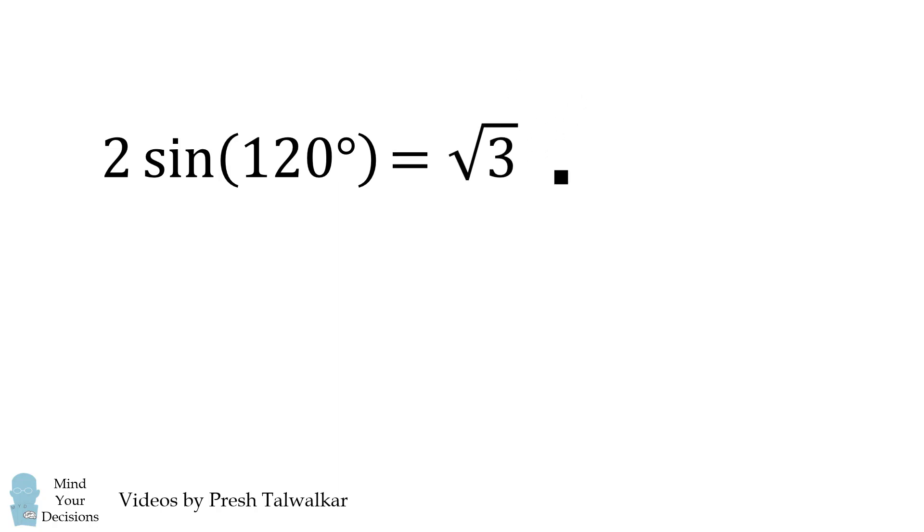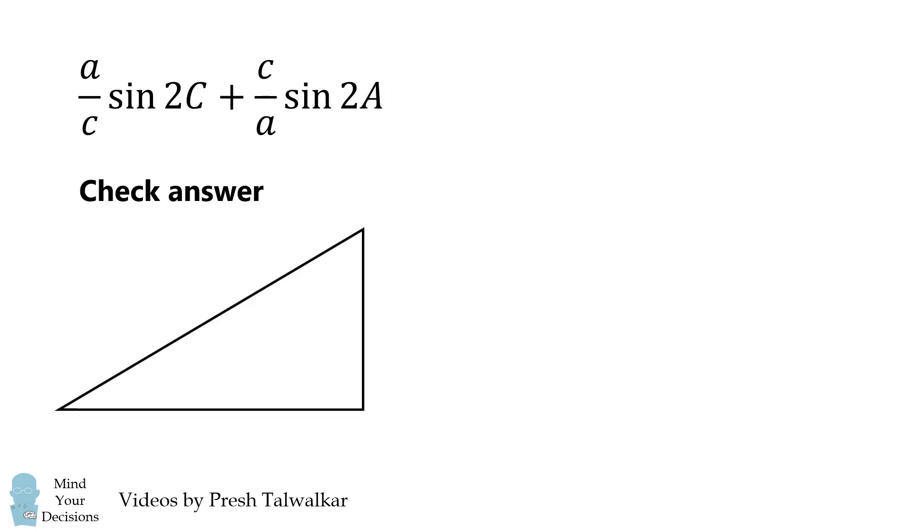Now just for fun, we can check our answer using the special 30-60-90 triangle. If we let angle A equal 30, B equal 60, and C equals 90, notice the angles are in an arithmetic progression. This is a special right triangle.